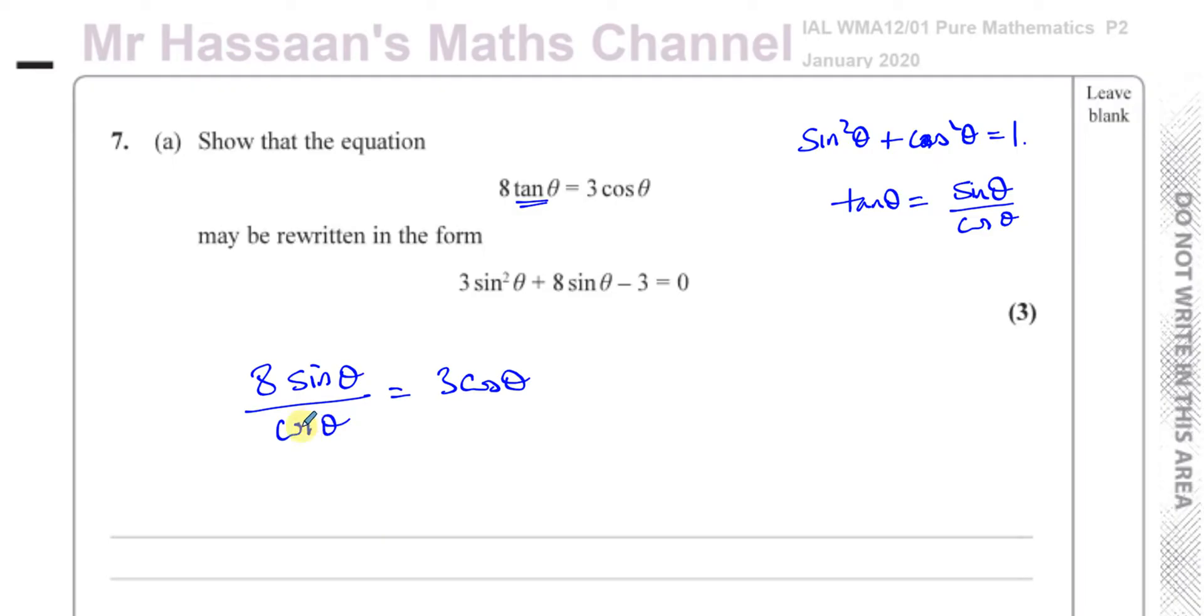Now we can see that we've got this fraction. There's no fraction here. Let's get rid of the fraction. Let's multiply both sides of the equation by cosine theta. So if we do that, we have 8 sine theta equals 3 cosine theta times cosine theta, which is written as cosine squared theta. We don't write it as cosine theta squared. We write it as cosine squared theta. It's the whole thing that's squared, not just the angle.